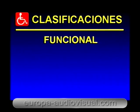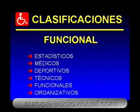Cuarto nivel: criterios de clasificación funcional. Los tres primeros niveles nos configuran la valoración del deportista discapacitado para la práctica deportiva, siendo estos niveles del tipo médico deportivo. Aquí se diseñarán las clases óptimas para competir en un deporte específico, aplicando diferentes criterios que dependen de las peculiaridades del deporte y de sus practicantes. Estos criterios pueden ser estadísticos, médicos, deportivos, técnicos, funcionales y organizativos.